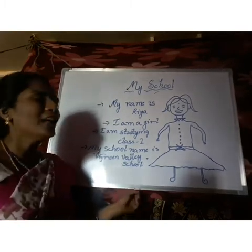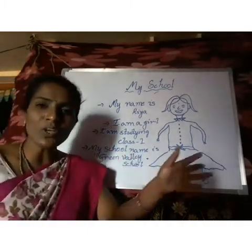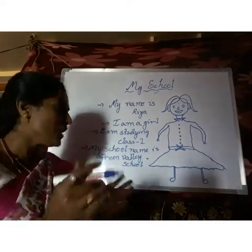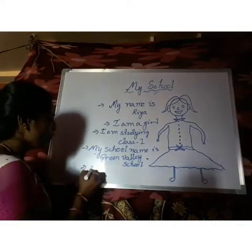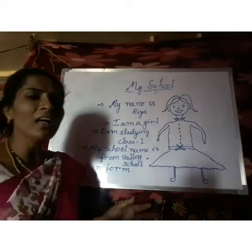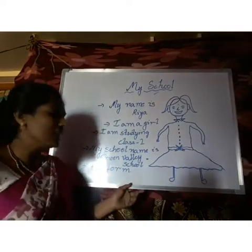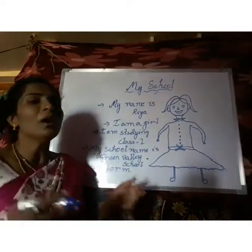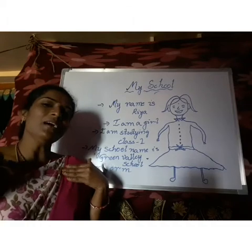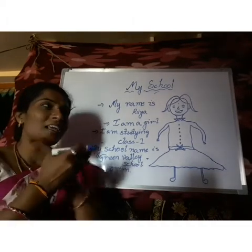Every day she is wearing one type of dress when going to school. We too wear a specific dress on particular days — that is called a uniform. Every day when she goes to school, she wears that dress called a uniform. Riya is telling: my name is Riya, I am a girl, I am studying class 1, and my school name is Green Valley School.